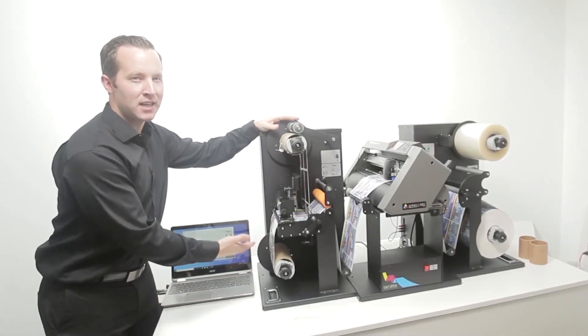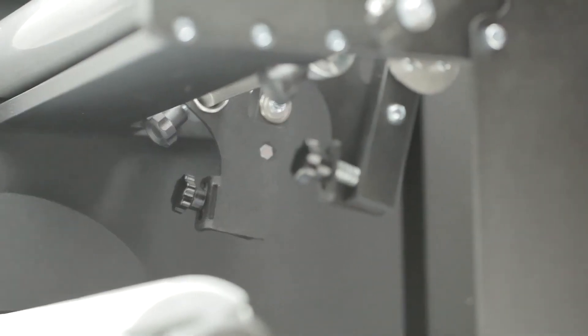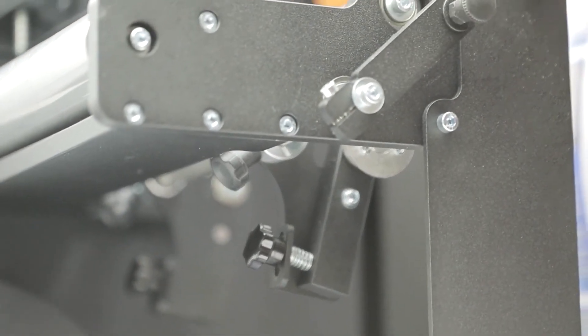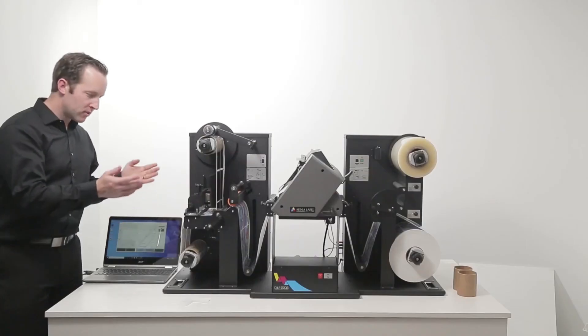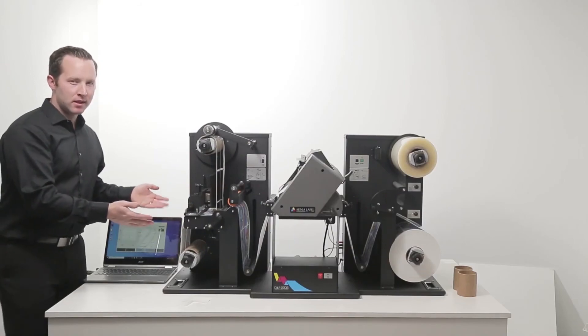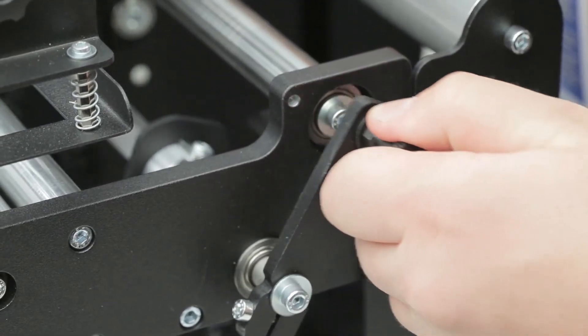There are two back slitters underneath the matrix remover that can be set to remove excess material from the sides of the media. Once those are set properly, place the lever in the locked position.